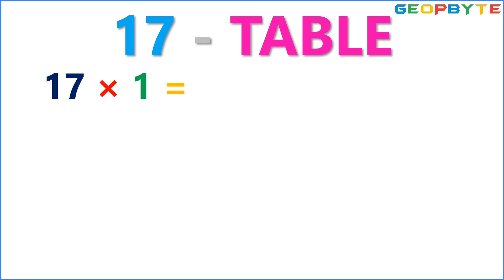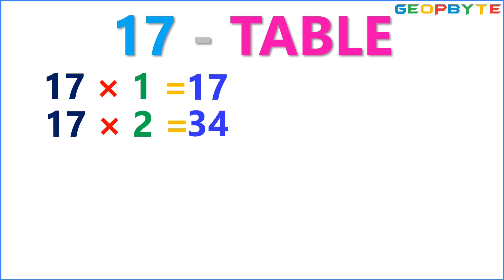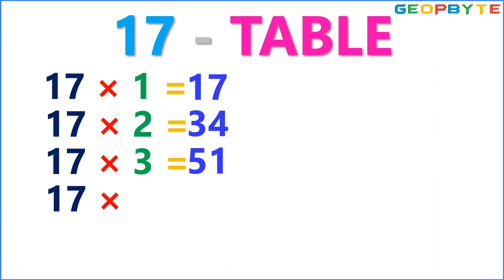17 ones are 17. 17 twos are 34. 17 threes are 51. 17 fours are 68.